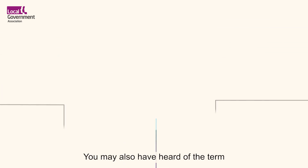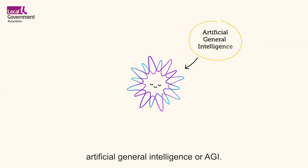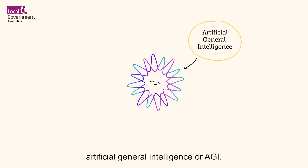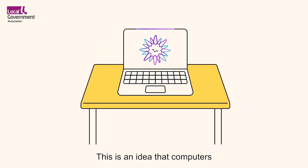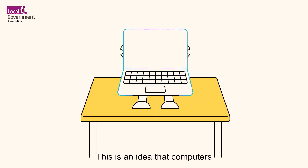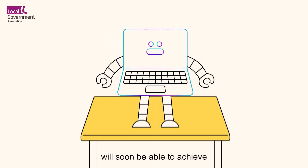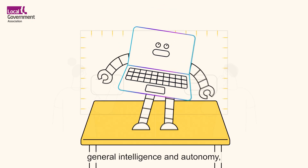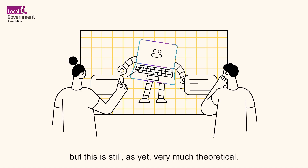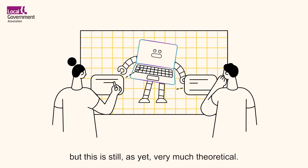You may also have heard of the term artificial general intelligence, or AGI. This is an idea that computers will soon be able to achieve general intelligence and autonomy. But this is still, as yet, very much theoretical.